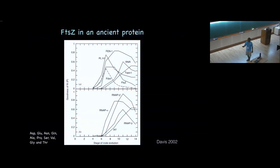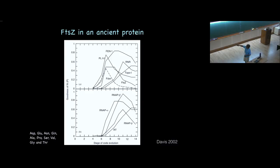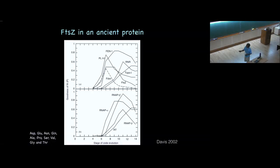FtsZ is a very ancient protein. Davis argued in a 2002 paper that, looking at codon evolution and the amino acids present in FtsZ, the FtsZ sequence probably peaks around stage 7 to 8 of codon evolution — the stage when there were only 10 amino acids. So FtsZ evolved even before all 20 amino acids had evolved; one of the first proteins to ever evolve was probably FtsZ, as argued in that paper.